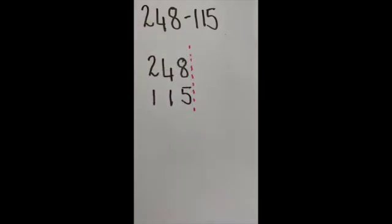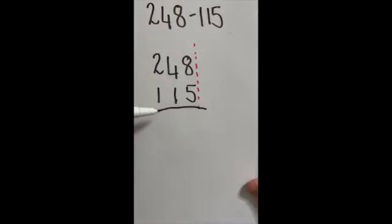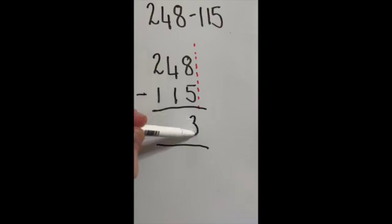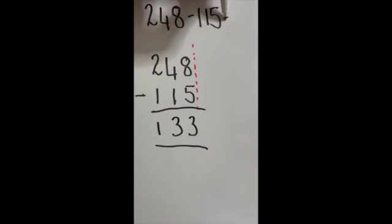This is the takeaway, so I'm going to do the top take away the bottom. Eight take away five equals three, four take away one is also three, and two take away one is one. Nice and simple, and our answer is 133.